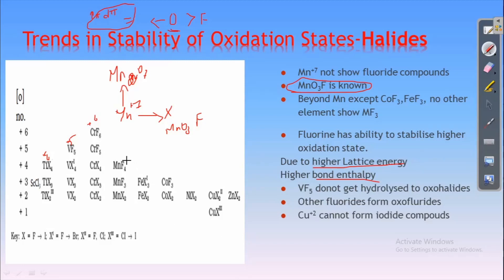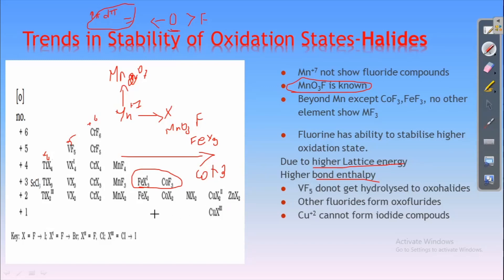Beyond manganese, no other compounds except iron and cobalt will form a trihalide. That is, only iron and cobalt will form trihalides. Nickel, copper, and zinc will not form trihalides. This is because iron shows +2 and +3 oxidation states as stable states, and similarly for cobalt. But for nickel, copper, and zinc, the stable oxidation state is +2, and because of this, they will not show trihalides.